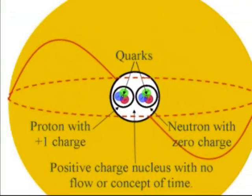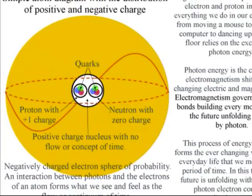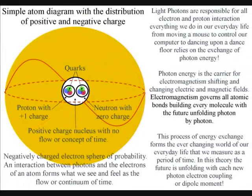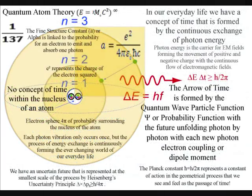If the continuum of time is formed by light waves interacting with the electron probability cloud that surrounds the atom, in this theory the atoms are standing waves in time with the passage of time unfolding photon by photon with each new photon electron coupling or dipole moment.